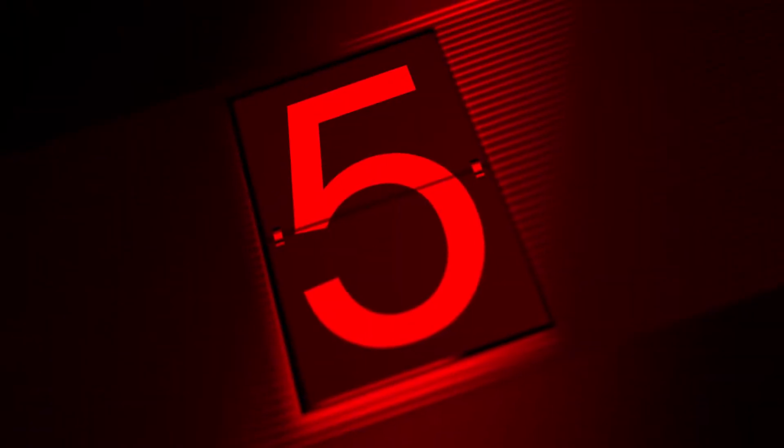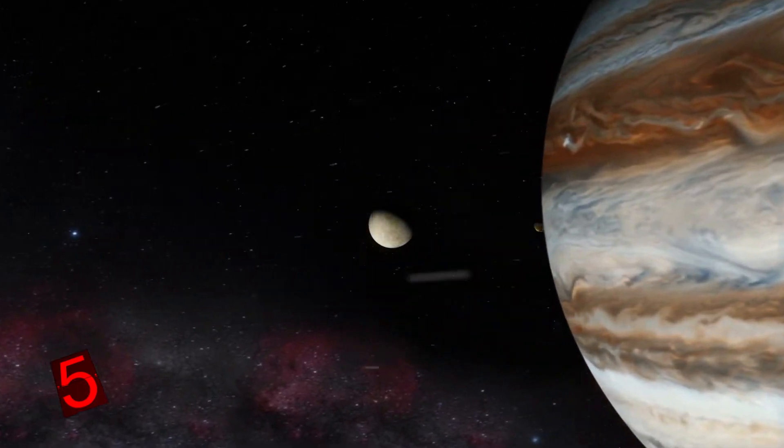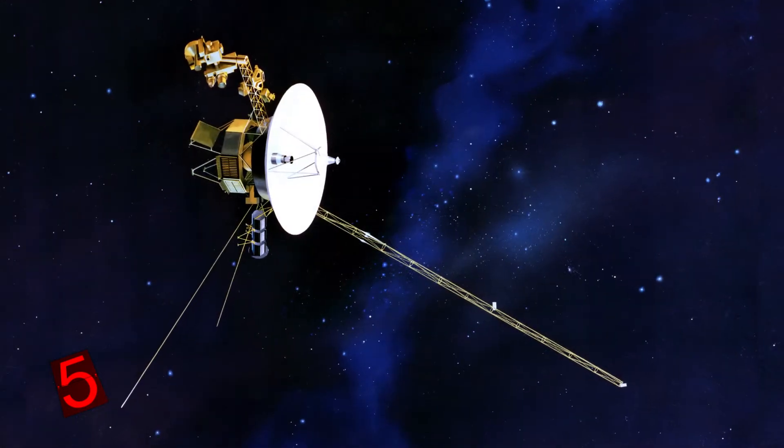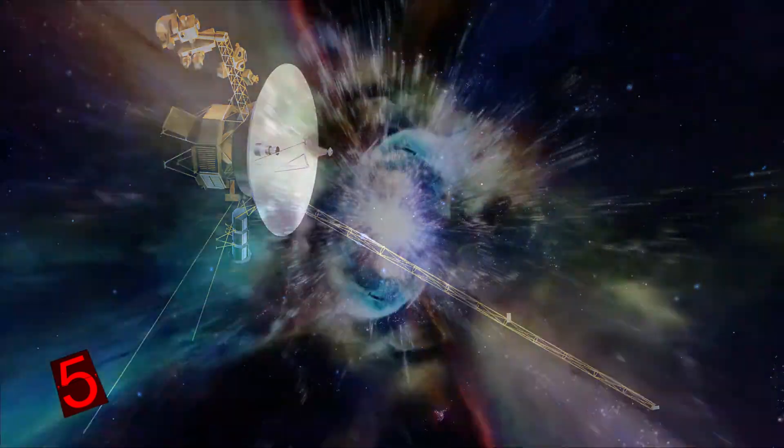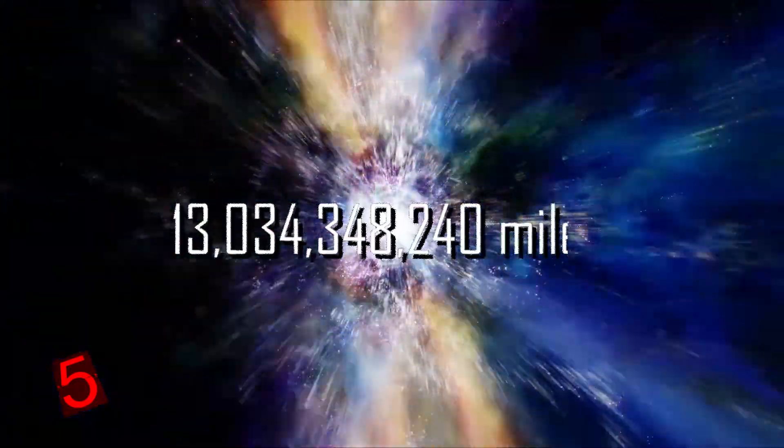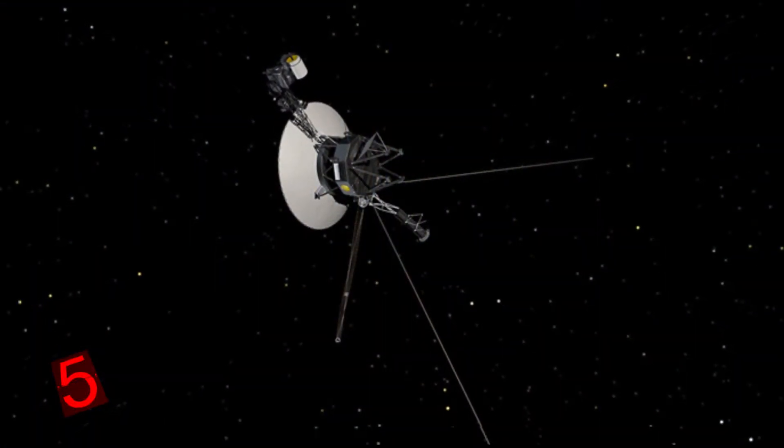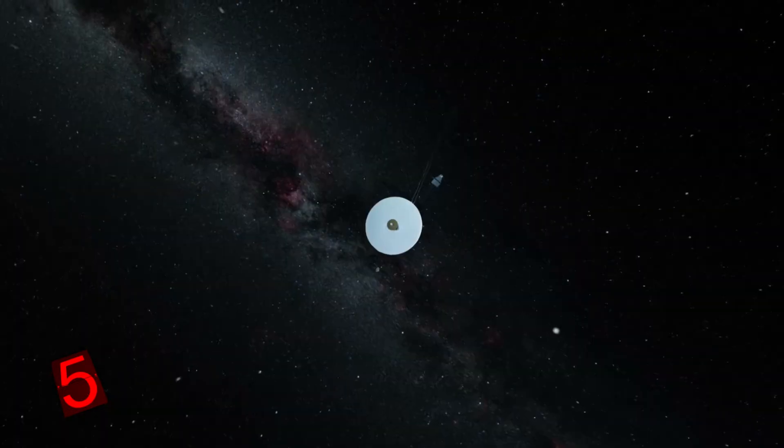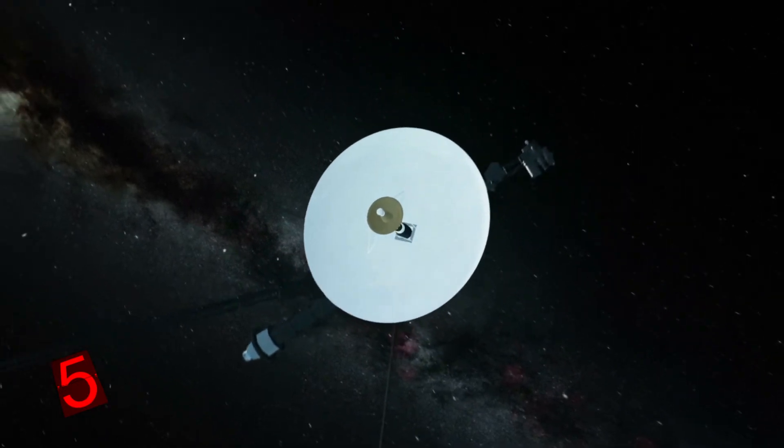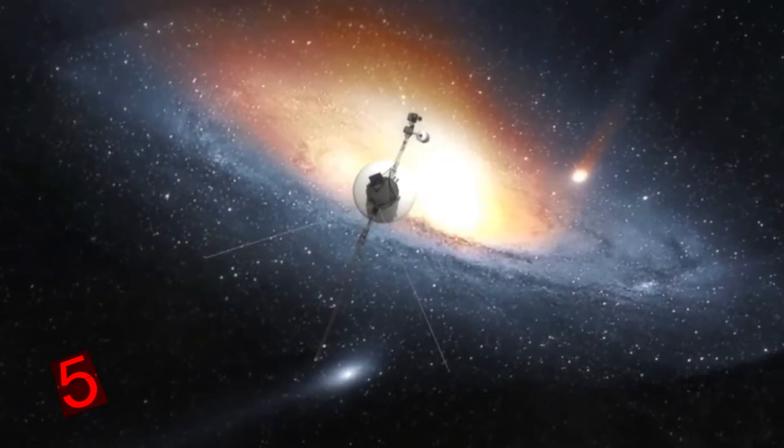Number 5, Voyager 1 and 2. It's not only our neighboring planets that astronomers and scientists have attempted to study by sending robots into space. Voyager 1 and Voyager 2 are robotic probes used by an American scientific program to study the outer solar system and beyond. Located 13,034,348,240 miles away from the Earth, and counting, Voyager 1 is the furthest human-made object in space. In August 2012, it became the first human-made object to enter interstellar space. Unfortunately though, the mission is expected to end in 2025 when the probe's generators will no longer have enough electric power to continue operating the equipment.